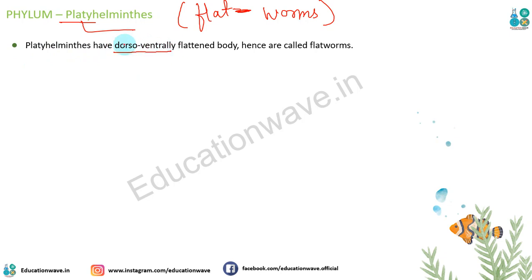Yaad rakhiye: dorsi ka matlab hota hai upar (dorsal) aur ventral ka matlab hai neeche. Agar aap ooper se aur neeche se dekhenge toh dono sides bilkul flat lagti hain. Jaise ki ek flat leaf - peeche se dekhenge toh pata nahi lagta kaunsi side up hai kaunsi down. Isi tarah Platyhelminthes ki bhi dorsoventrally flattened body hoti hai - isliye inhe flat worms kehte hain.